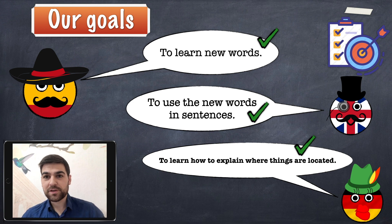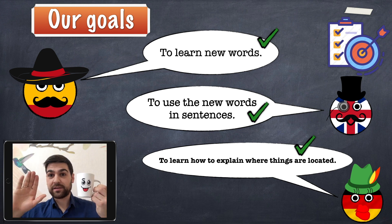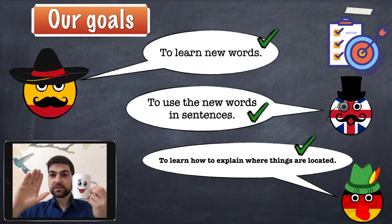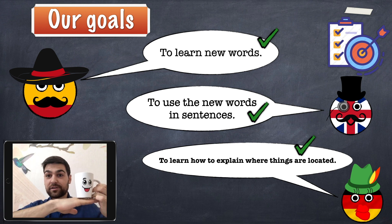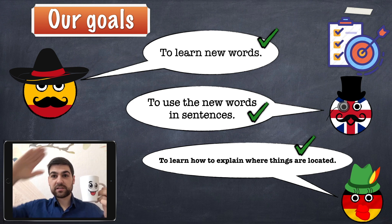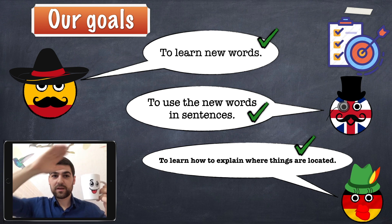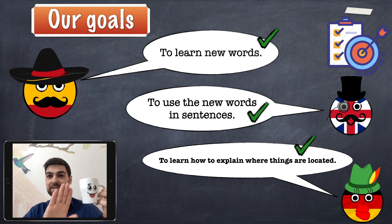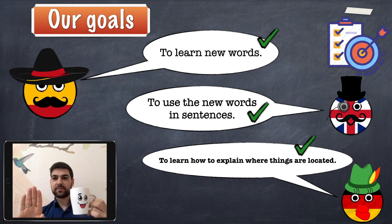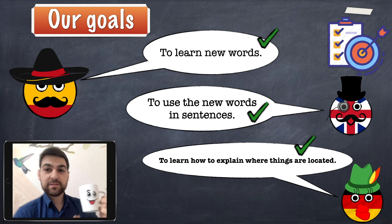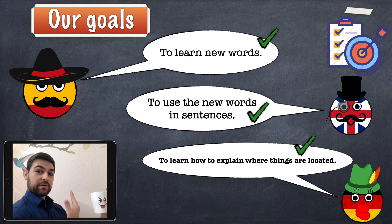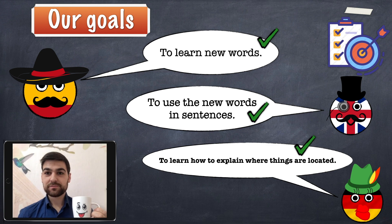Now to finish, I'm going to give you a quick example using a happy mug and my hands. My hand is on the mug, my hand is under the mug, my hand is above the mug, my hand is next to the mug — side by side — my hand is behind the mug, and my hand is in front of the mug. My hand is between me and the mug.